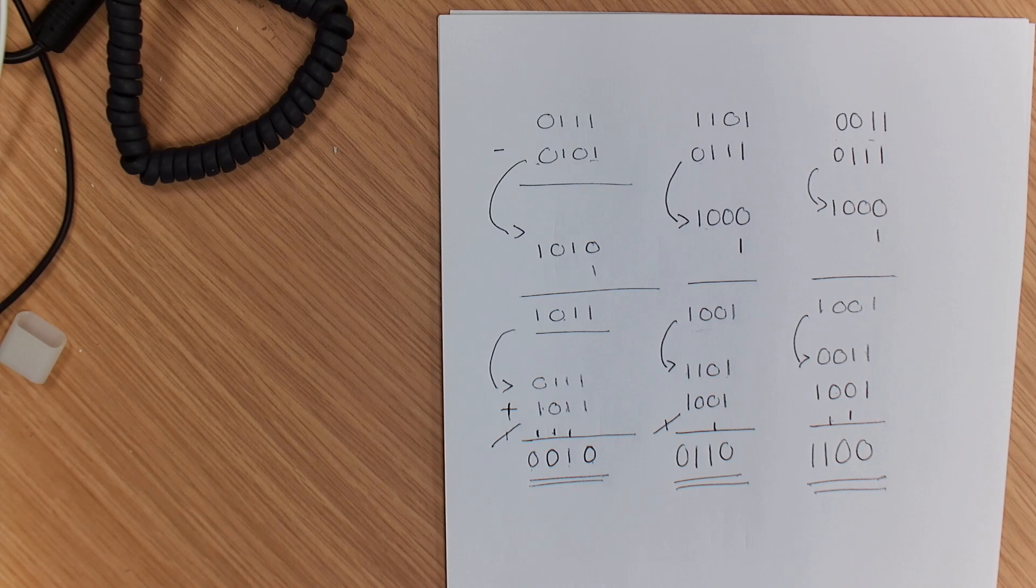So that kind of breaks down how you can subtract negative numbers and how you can work with that within two's complement. So hopefully that helps.